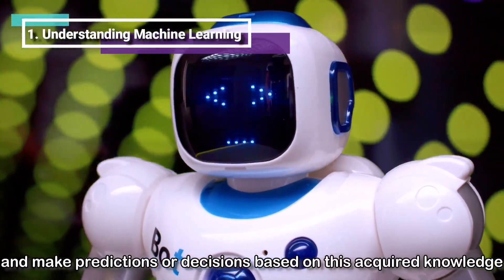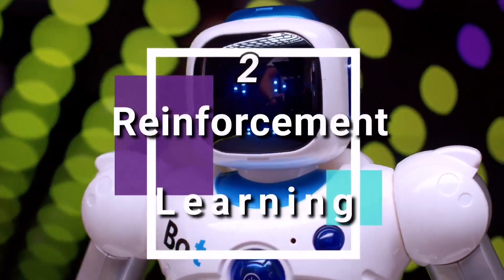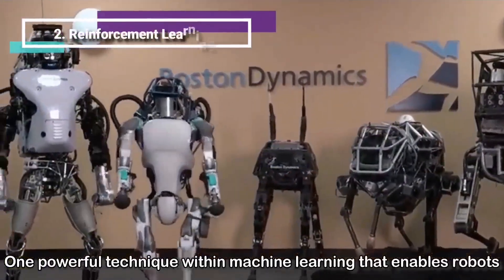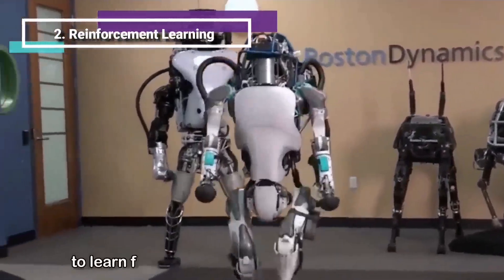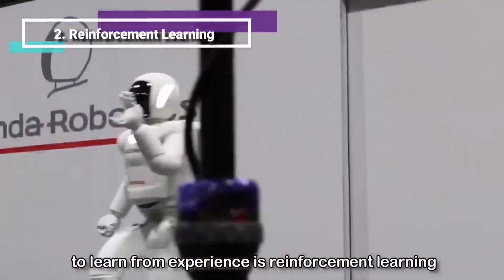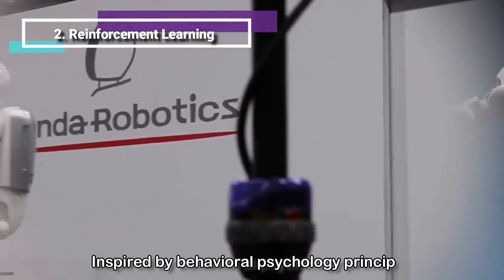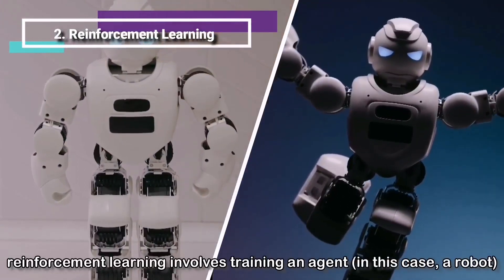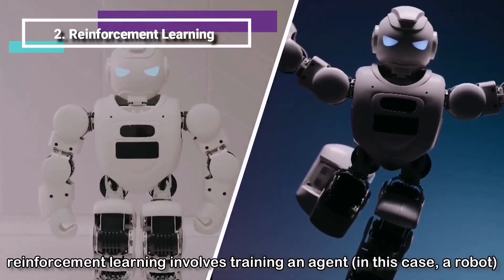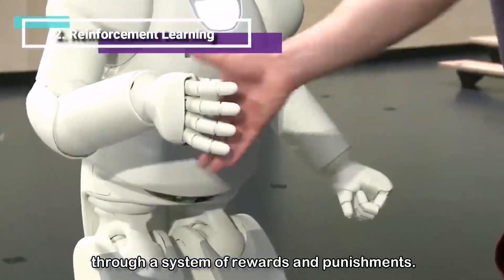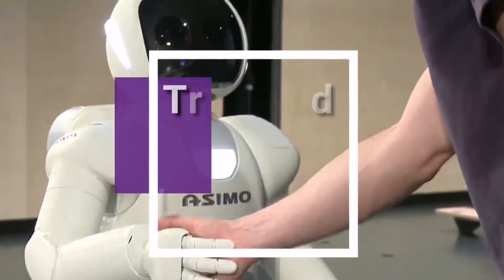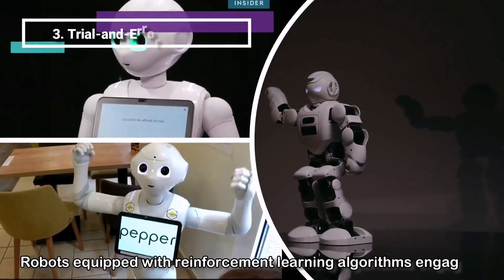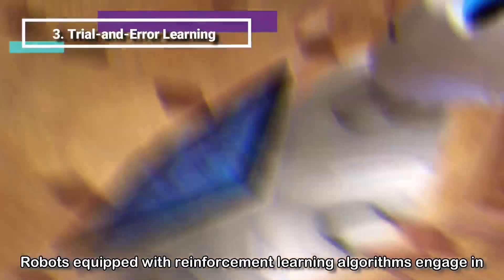Number two: reinforcement learning. One powerful technique within machine learning that enables robots to learn from experience is reinforcement learning. Inspired by behavioral psychology principles, reinforcement learning involves training an agent, in this case a robot, through a system of rewards and punishments.